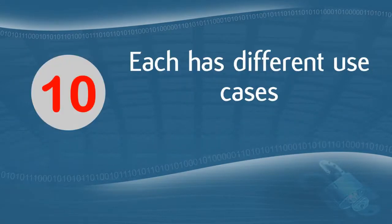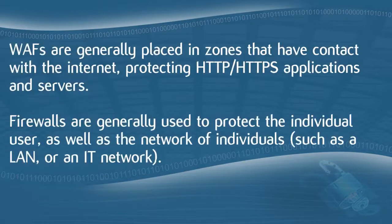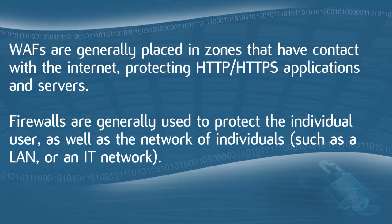The tenth and final difference is that each has different use cases. WAFs are generally placed in zones that have contact with the internet, protecting HTTP and HTTPS applications and servers, with a focus on the safety of the application or server. WAFs are designed to enhance firewalls rather than replace them. Firewalls are generally used to protect individual users as well as networks such as a LAN or IT network. Traditional firewalls are highly effective but offer protection only at the most basic network levels, which is why a WAF is often used in conjunction with a firewall for increased security across multiple network layers.